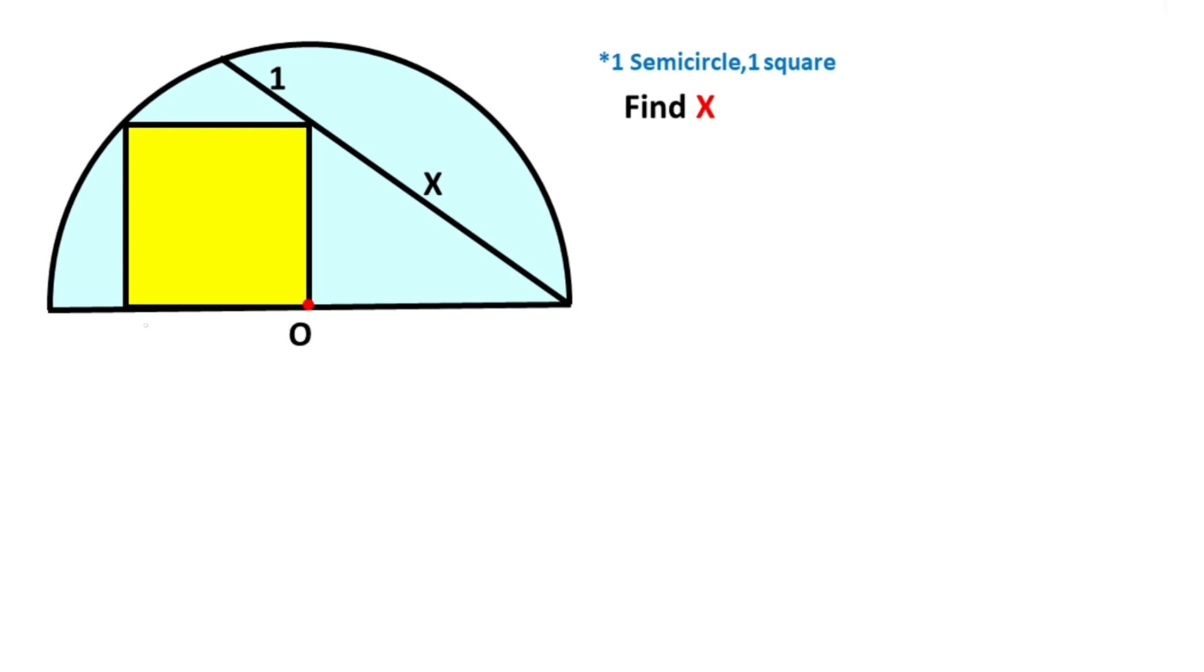First of all, I want to represent one side of the square as y. So here is also y, because of the square.